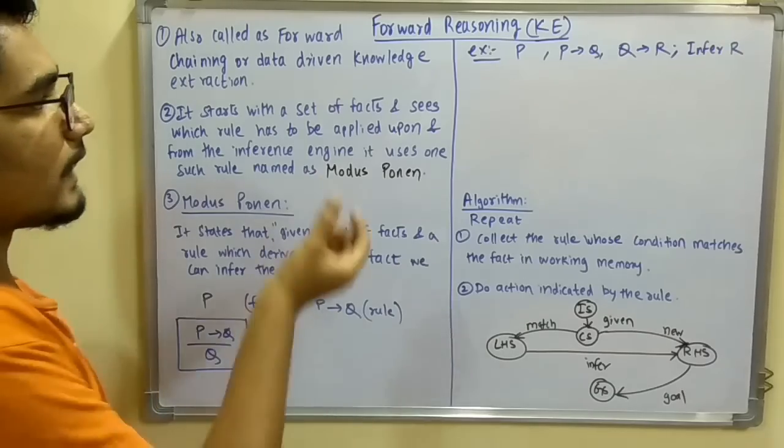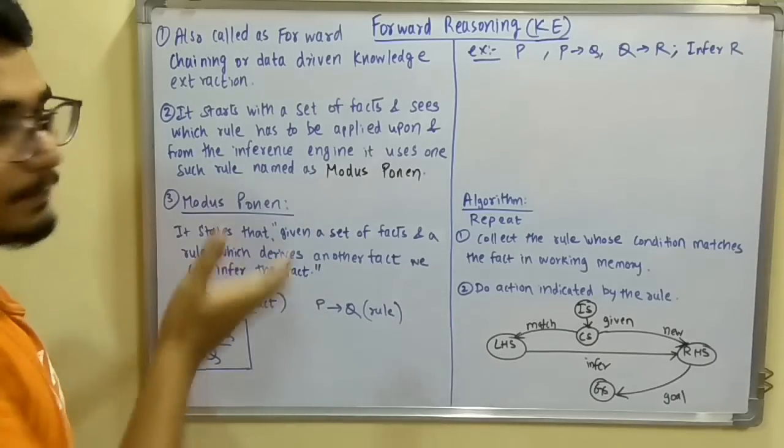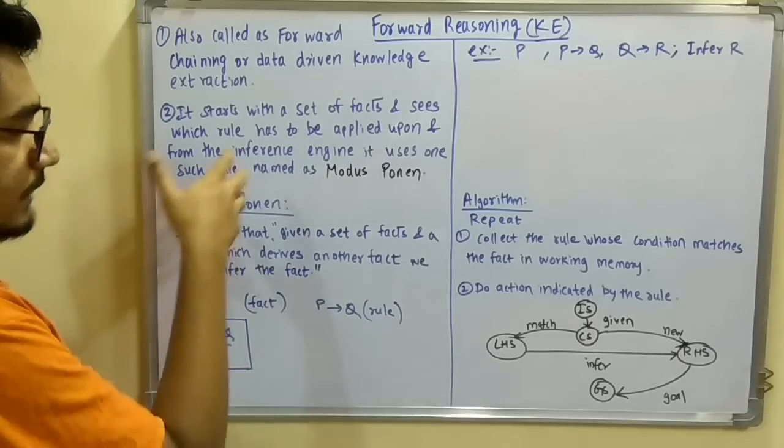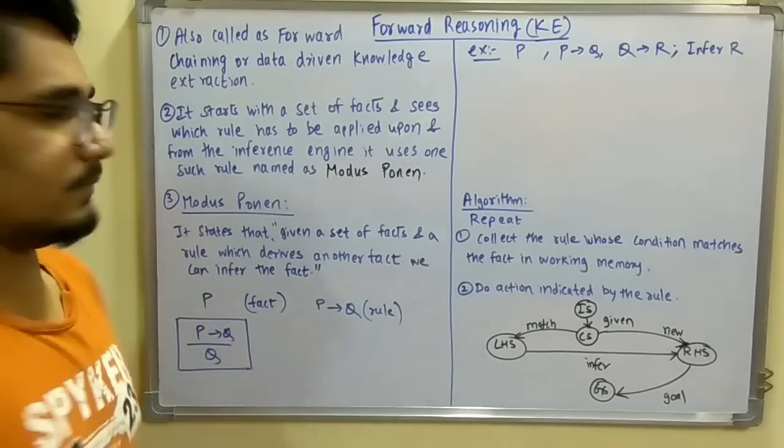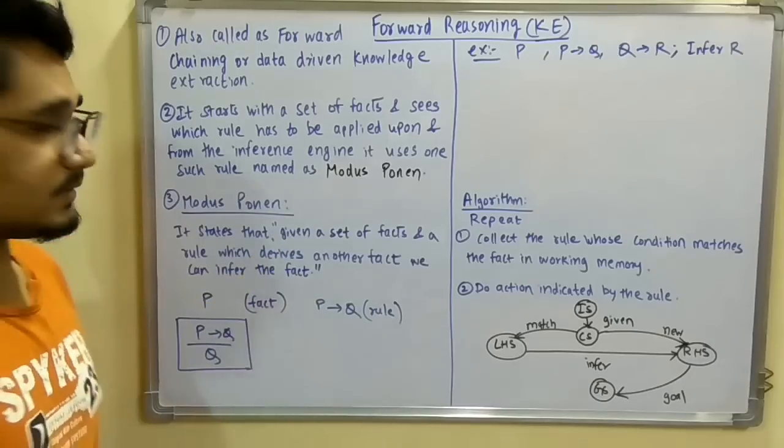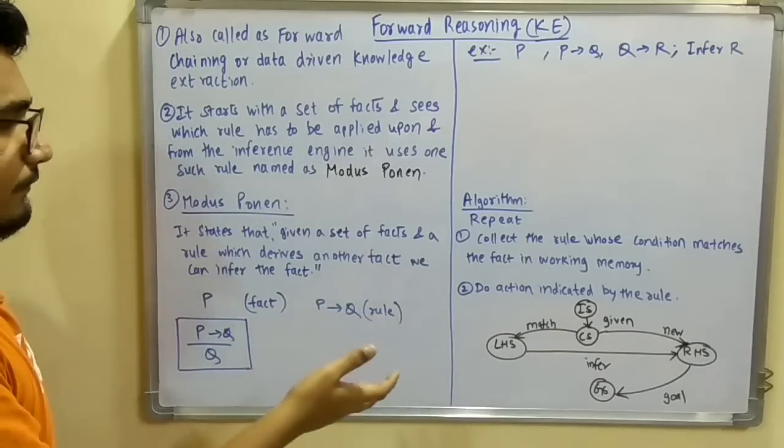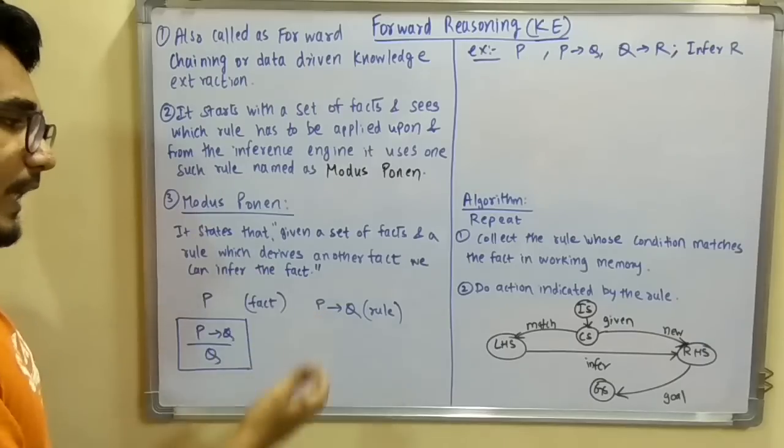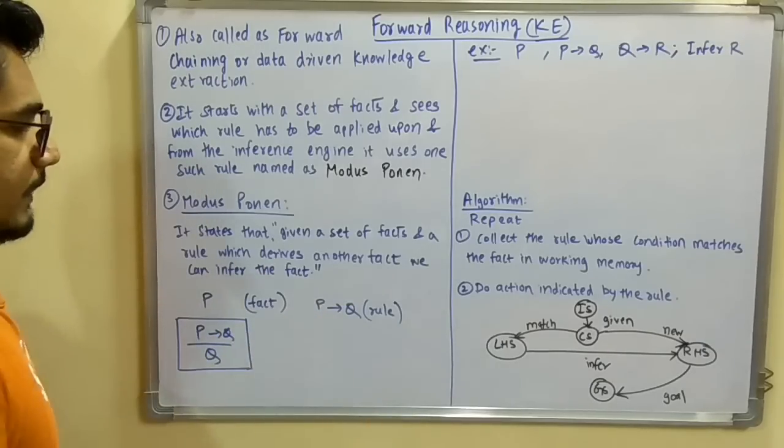One such rule for forward reasoning is named modus ponens. Modus ponens states that given a set of facts and a rule which derives another fact, we can derive that fact.